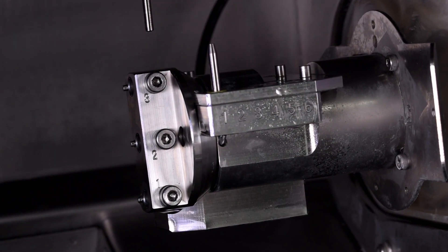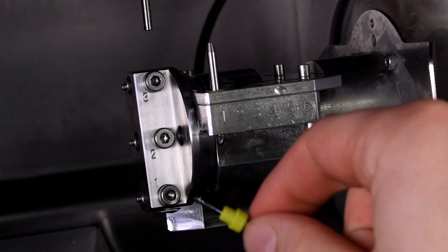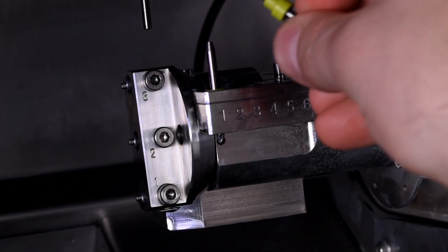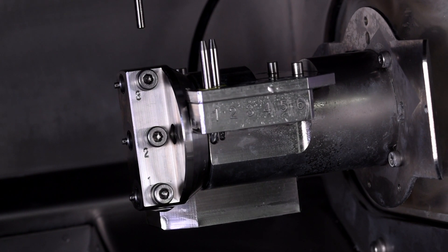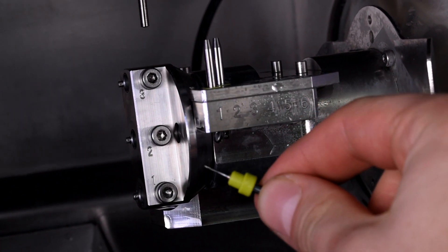To produce custom abutments from pre-milled titanium blanks, your DWX42W needs to be fitted with specialist 3mm, 2mm, and 1mm diameter ball end milling burrs.